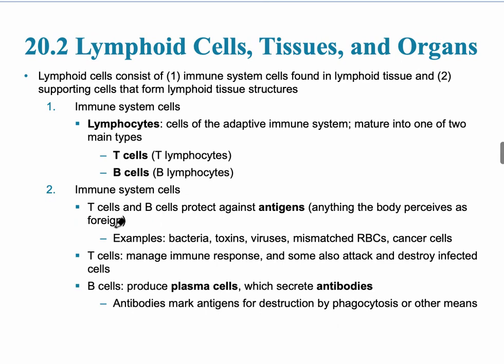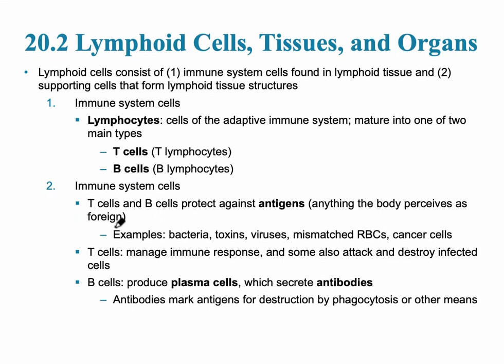Our next slide is on lymphoid cells themselves, the tissues and the organs. The cells are the immune system cells, and those specifically are the lymphocytes, one of those five leukocytes that you've learned. These lymphocytes are part of the adaptive immune system, which we'll be talking about later. The two types of lymphocytes are T cells, also called T lymphocytes, and B cells, B lymphocytes.